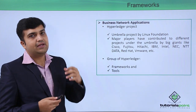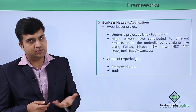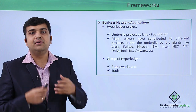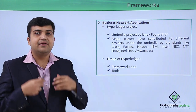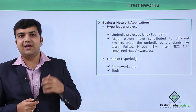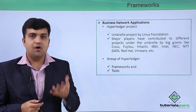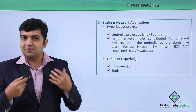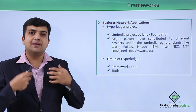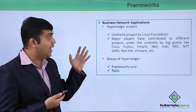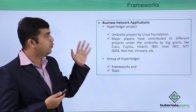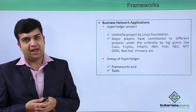Hyperledger is essentially a collection of frameworks and tools, and these help you to create your own custom private defined blockchain network. It also gives you the facility to write smart contracts, also known as chain code. These smart contracts contain custom logic for your own business applications.